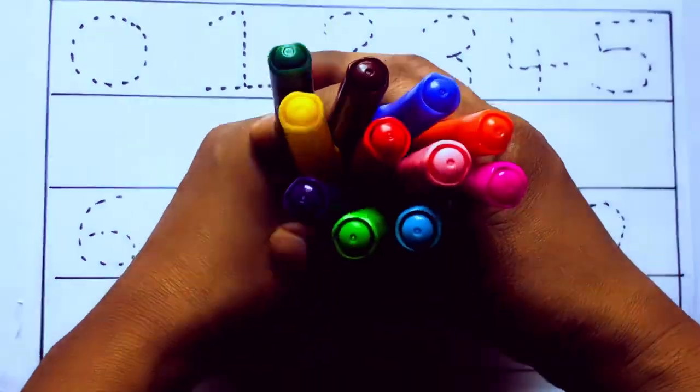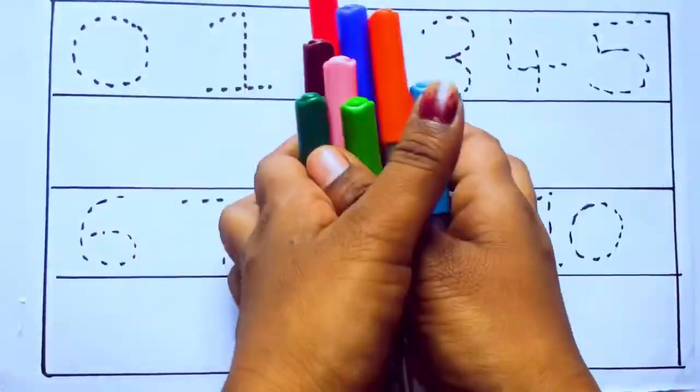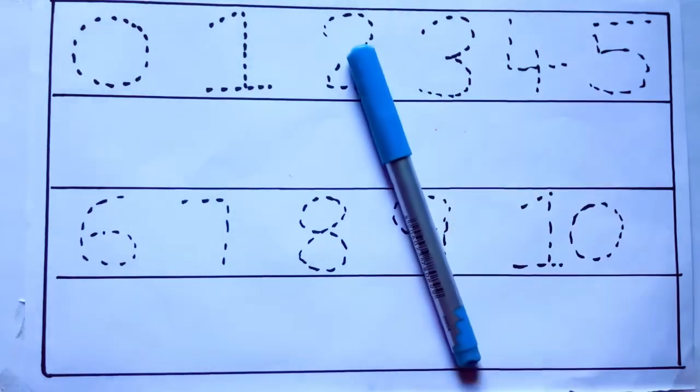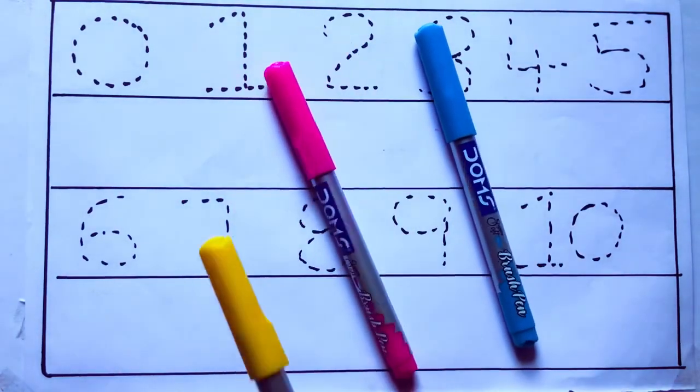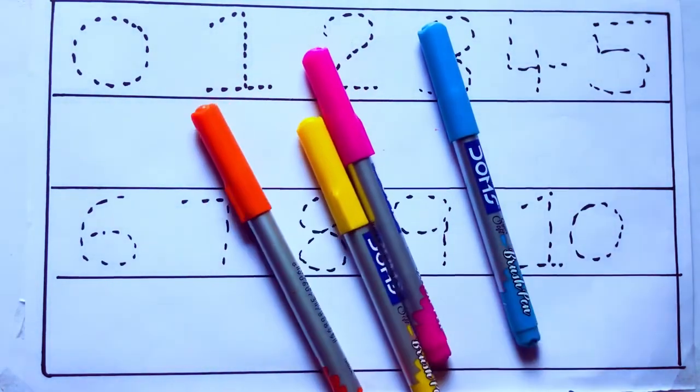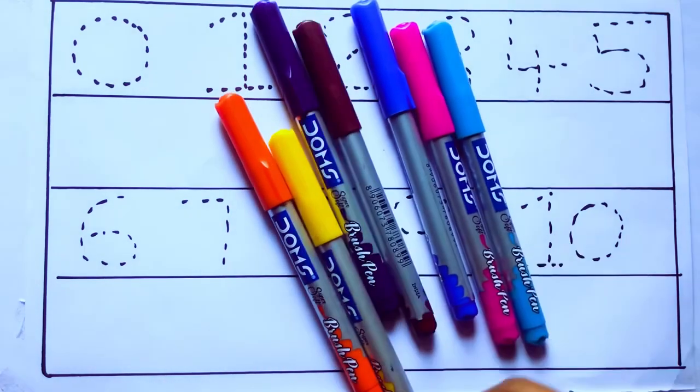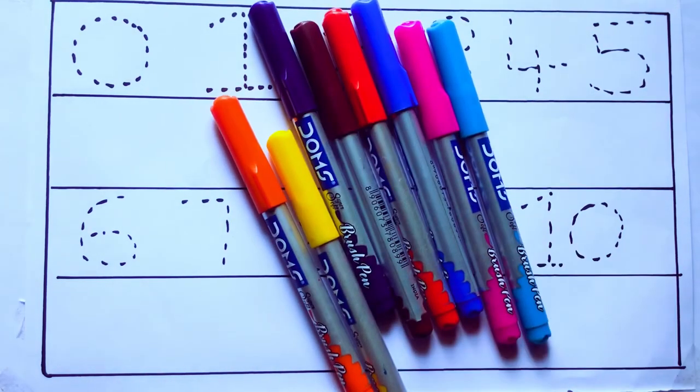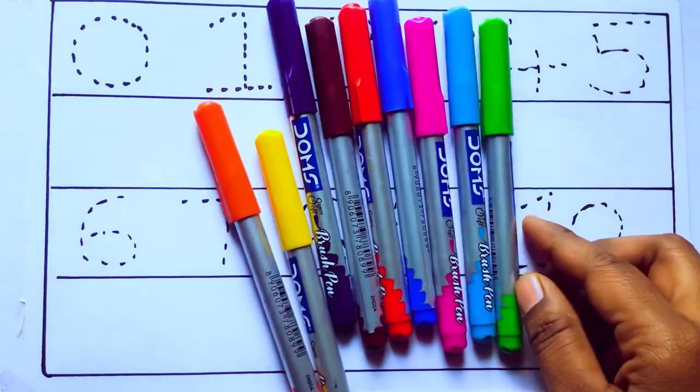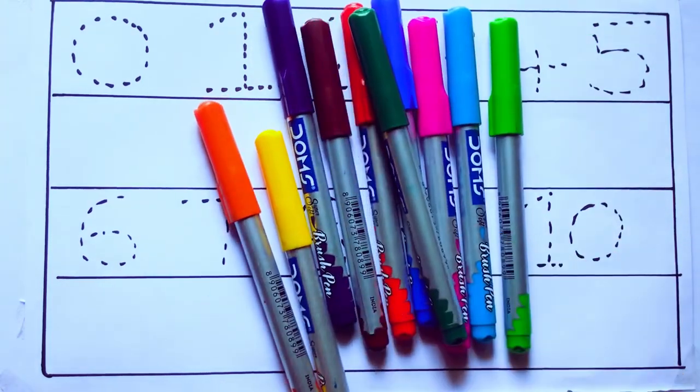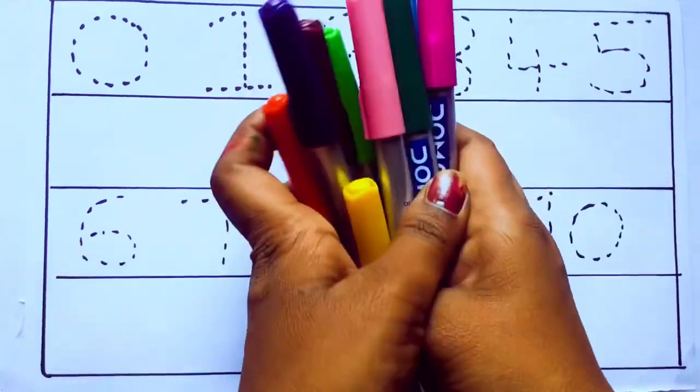Let's learn some colors. These are all the color pencils. Let's learn the names. Sky blue color, pink color, yellow color, orange color, violet color, blue color, brown color, red color, green color, and pink color.